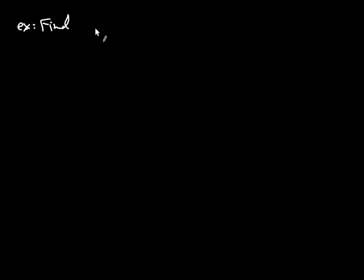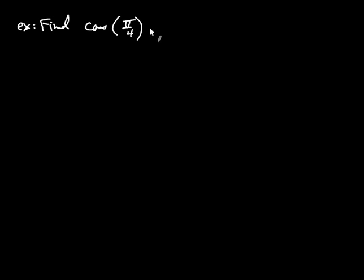So far in trig we have been in the following situation. We've been asked, for example, to find cosine of the angle, let's say pi over 4. In this case they give us the angle, and cosine of that angle we know is equal to root 2 over 2.